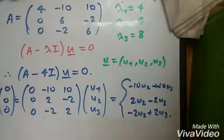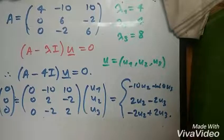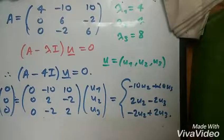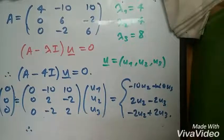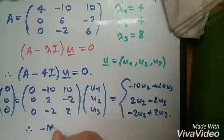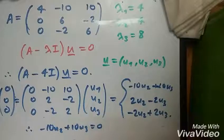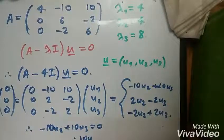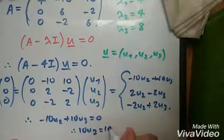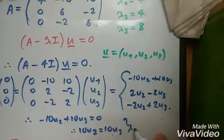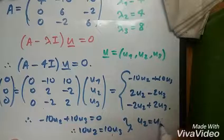This looks pretty obvious at this rate. You can clearly see that since there's no u1 involved, let's just take the first one: minus 10u2 plus 10u3 equals 0. Therefore, 10u2 equals 10u3, so actually, u2 equals u3.